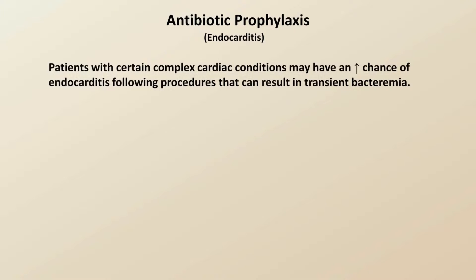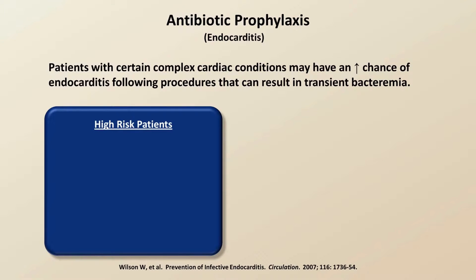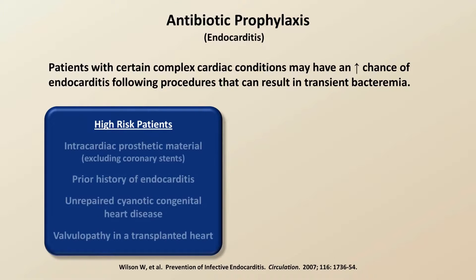An important subset of patients requiring antibiotic prophylaxis are those who require prophylaxis specifically against endocarditis. Patients with certain complex cardiac conditions may have an increased chance of endocarditis following procedures that can result in transient bacteremia, such as a tooth extraction. There are some patients at particularly high risk of seeding intracardiac structures even when the bacteremia is very brief and of low bacterial load. These high-risk patients include those with intracardiac prosthetic material — which includes valve replacements and some valve repairs but excludes coronary stents — patients with a prior history of endocarditis, patients with unrepaired cyanotic congenital heart disease, and those with valvulopathy in a transplanted heart.